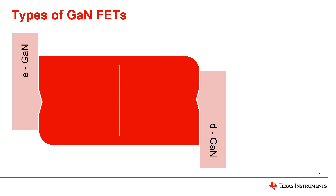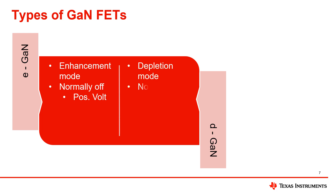An enhancement mode transistor is normally off and is turned on by positive voltage applied at the gate. A depletion mode transistor is normally on and requires the use of negative voltage applied at the gate to turn off.